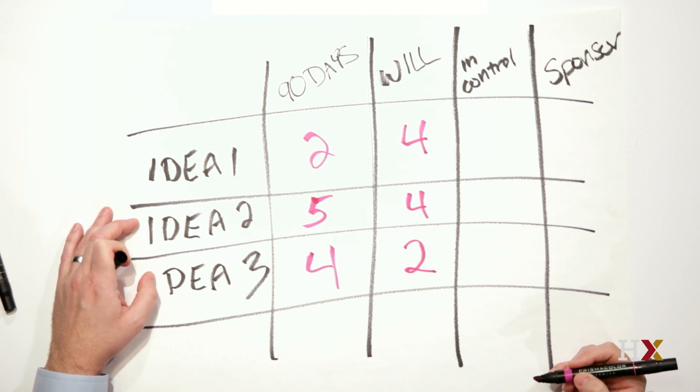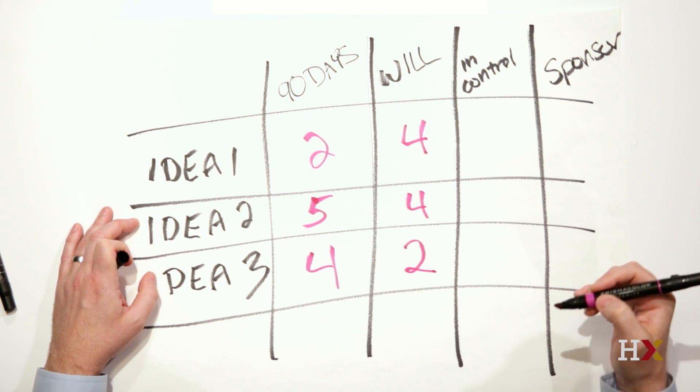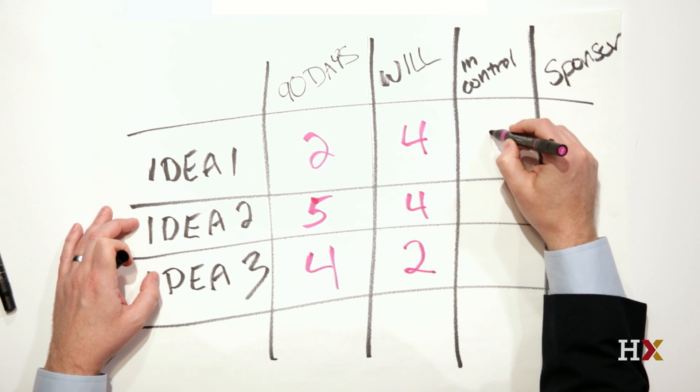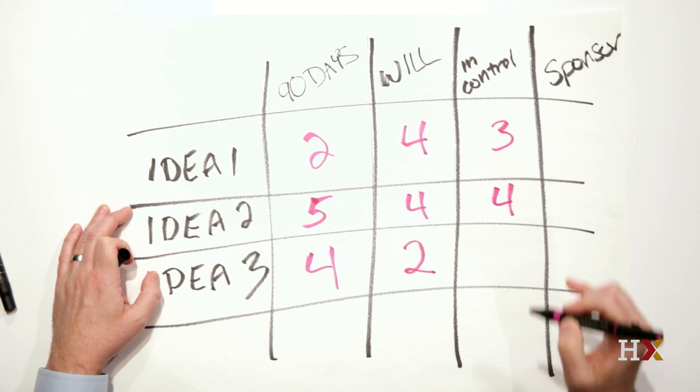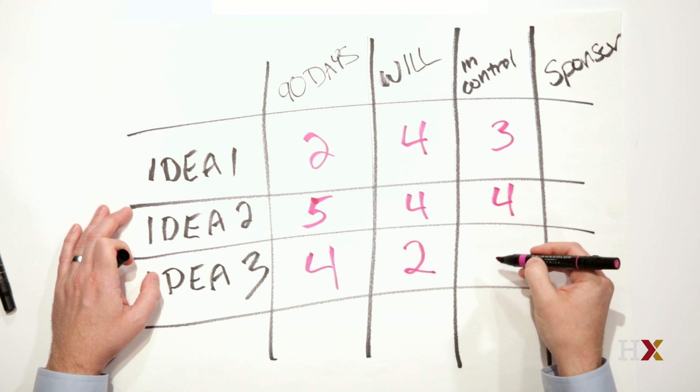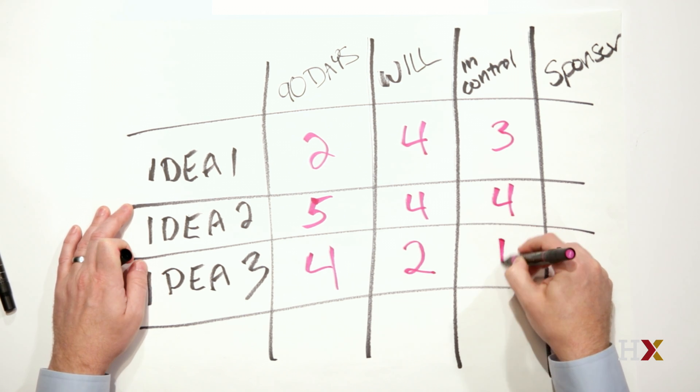And then as I look at things that I have control to make changes on, I might come across and say, okay, great. So this, again, maybe it's moderate level to control the changes. This one pretty much completely in my control and idea three is not in my control at all.